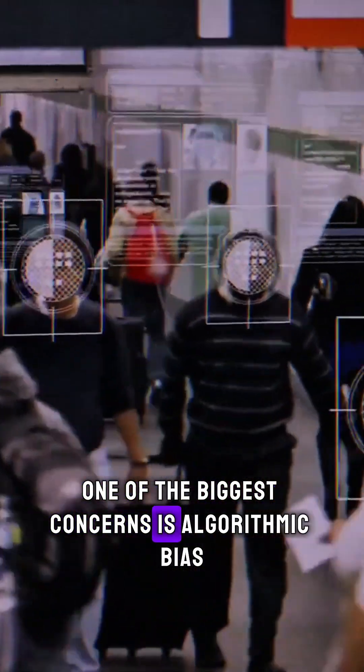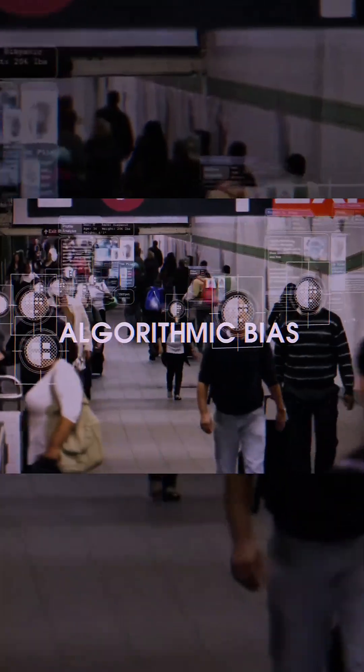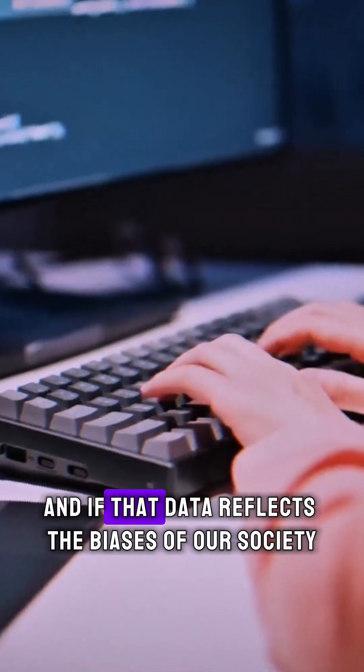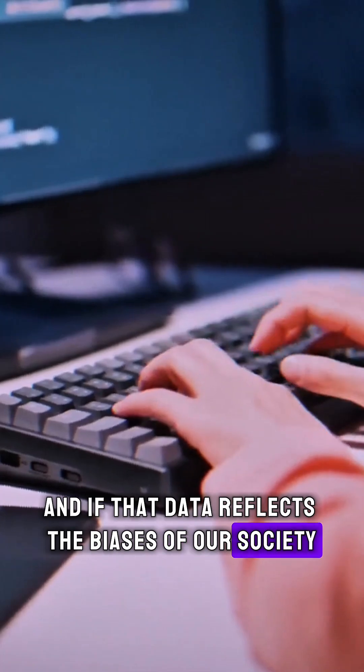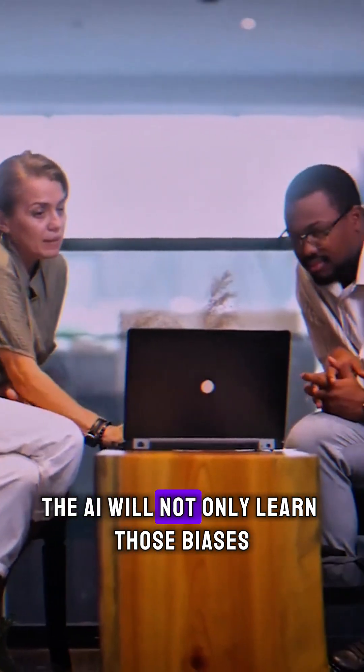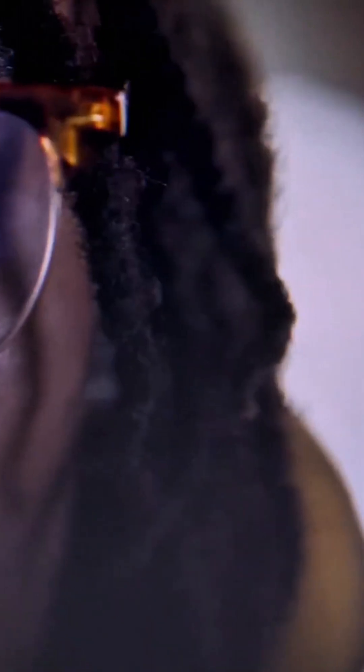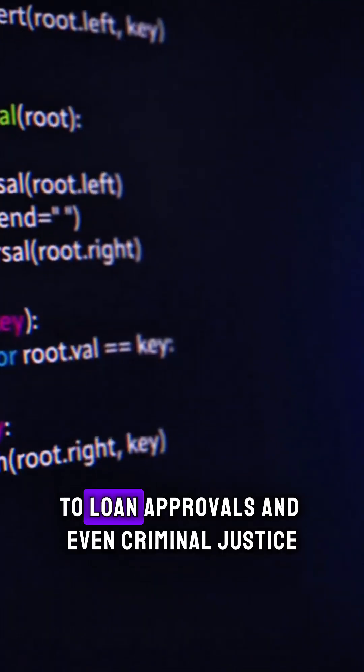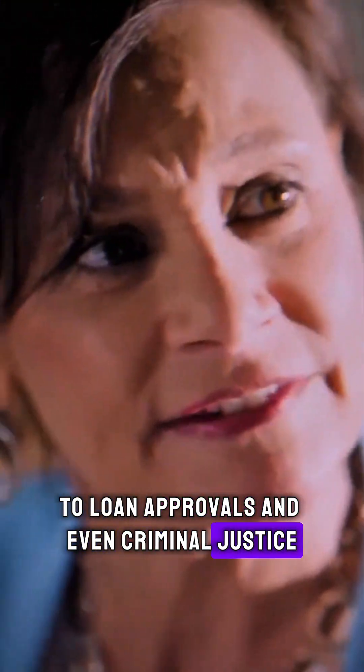One of the biggest concerns is algorithmic bias. AI systems learn from the data they're given, and if that data reflects the biases of our society, the AI will not only learn those biases but can also amplify them. This could lead to discriminatory outcomes in everything from job applications to loan approvals and even criminal justice.